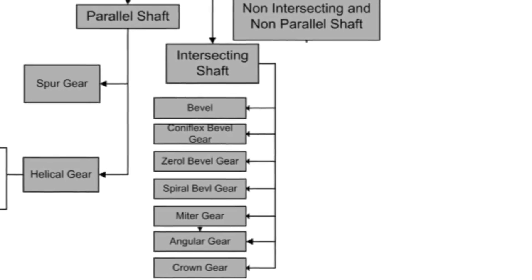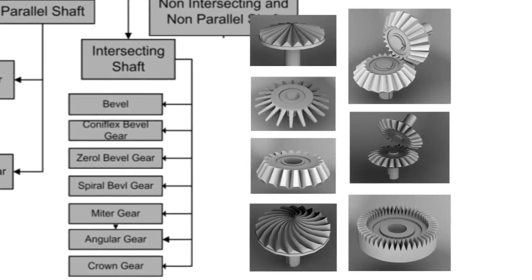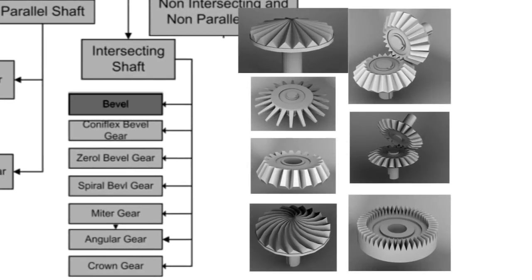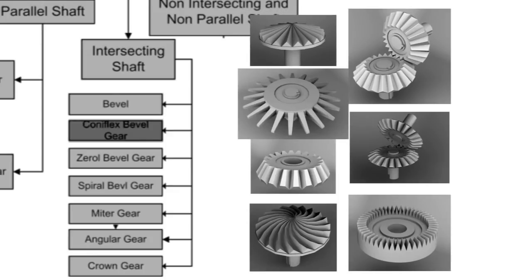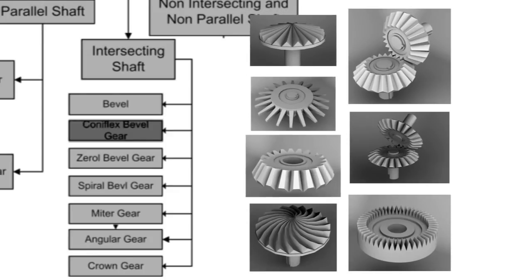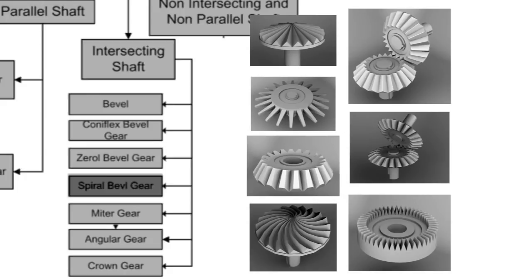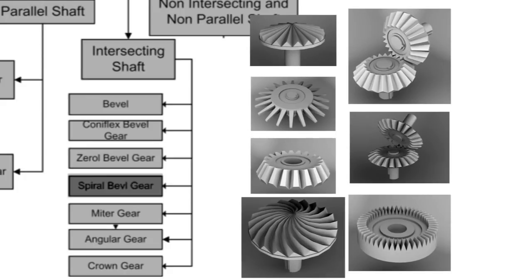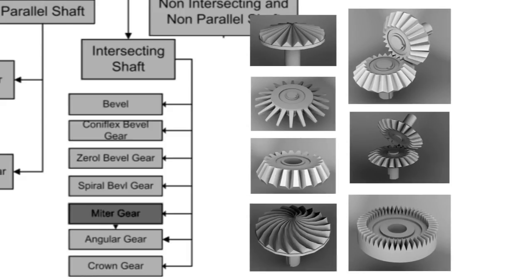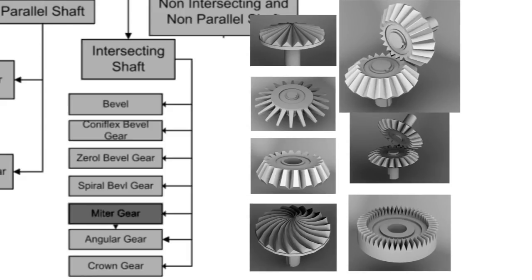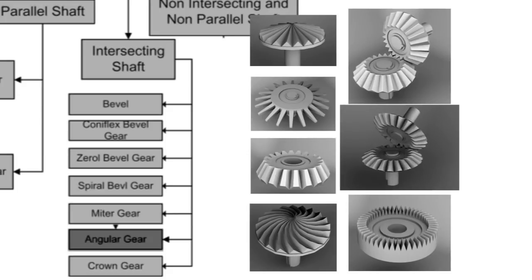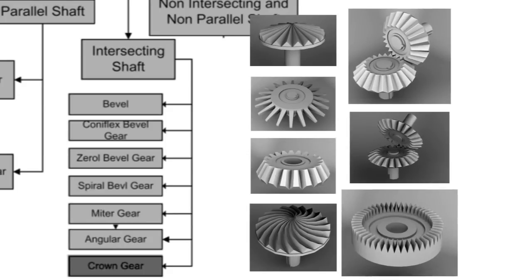Intersecting shaft gears are classified into the following groups: bevel gear, coniflex bevel gear, zerol bevel gear, spiral gear, miter gear, angular gear, and crown gear.